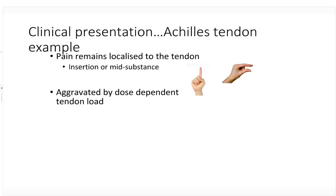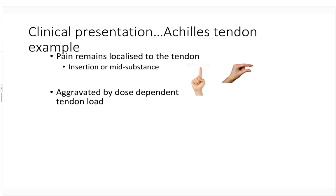The second key feature: tendon pain is aggravated by activities that ask that tendon to act like a spring — and while doing these activities, pain remains localised. For the Achilles, we start with a double-leg calf raise, get a pain score out of 10, ask where the pain is. We progress to single-leg calf raise — increasing load on the tendon, expecting an increase in pain, but the location remains localised. Then double-leg jump, then single-leg hop. We're looking for dose-dependent tendon load with localised pain.